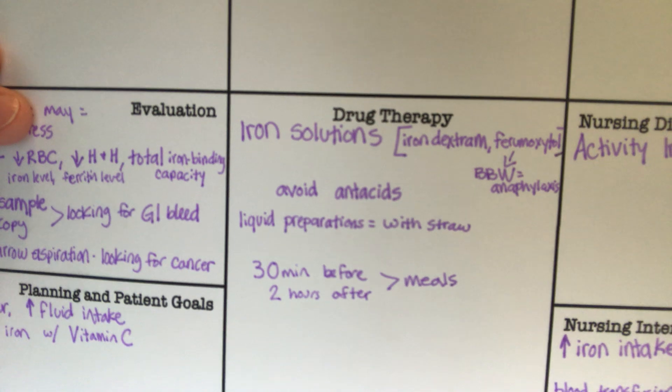A stool sample can be taken and the patient can be sent for an endoscopy to look for GI bleed or occult blood. A bone marrow aspiration can also be done to look for cancer. Drug therapies include iron solutions such as iron dextran or ferumoxytol. If giving iron orally, have the patient use a straw, take it with vitamin C or orange juice to increase absorption, and avoid antacids, which can interfere with iron absorption.